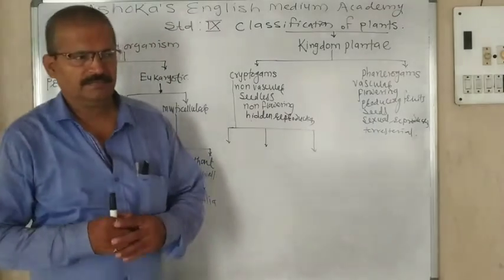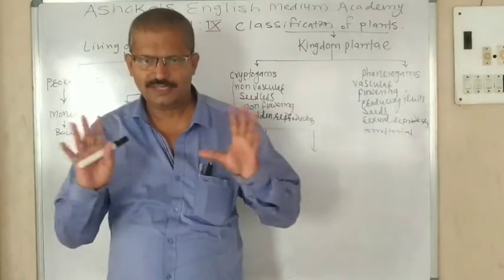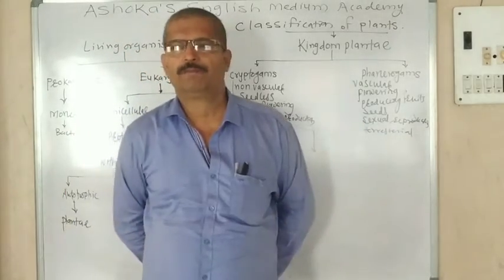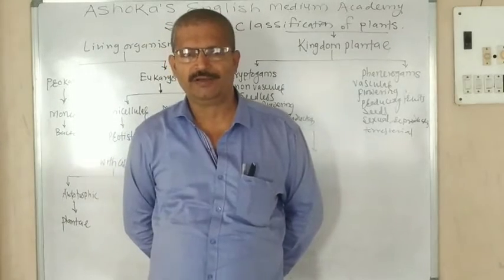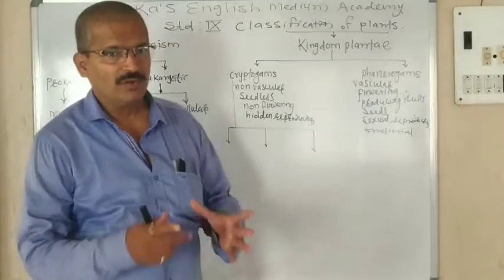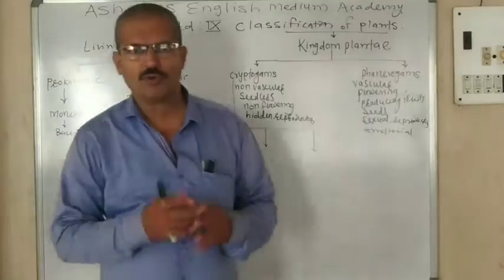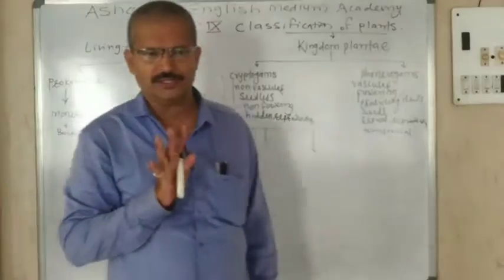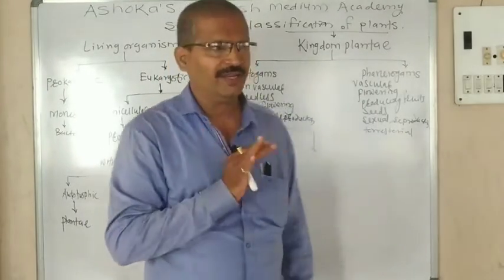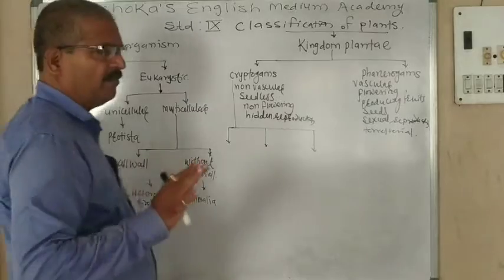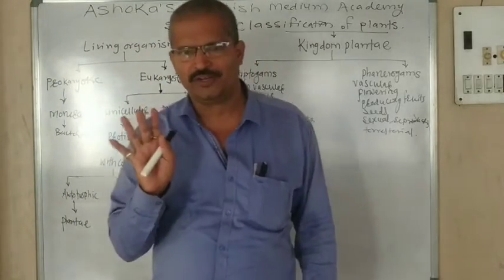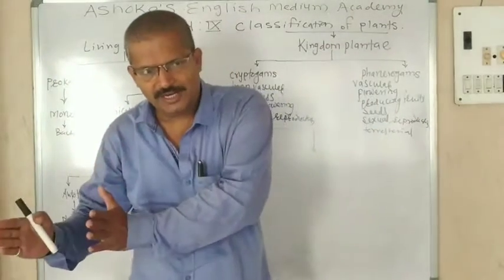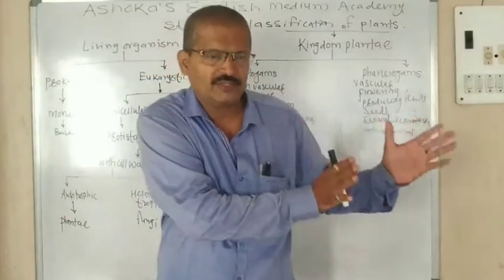Dear students, last time you studied the classification of living organisms based on 5 kingdoms, which was proposed by scientist Whittaker in 1959. Whittaker classified living organisms into two main parts. All living organisms are classified into two main divisions: one is called prokaryotic and the second one is called eukaryotic.